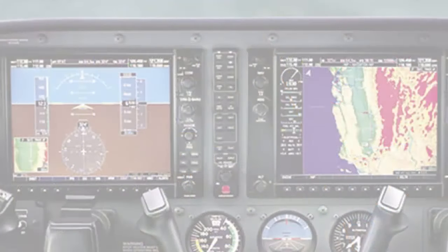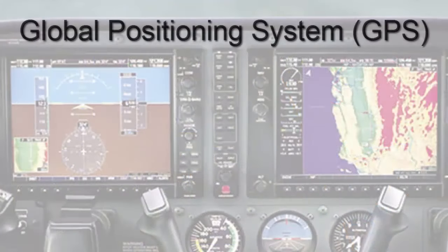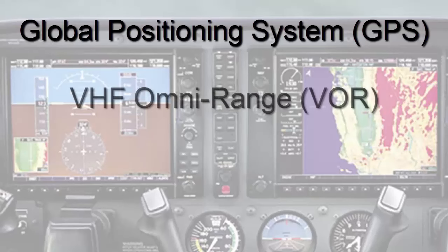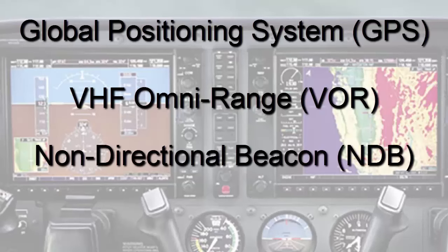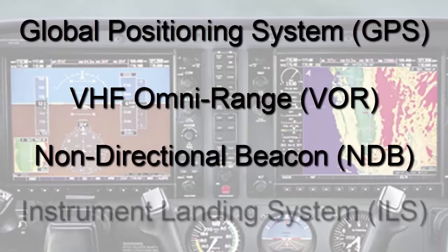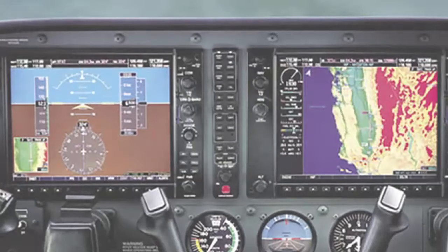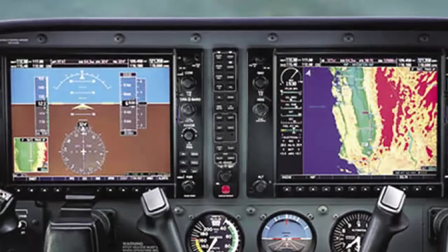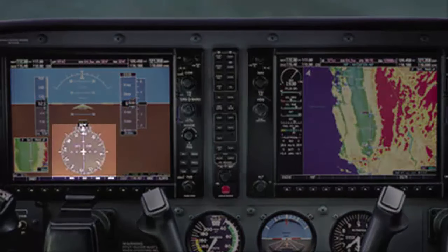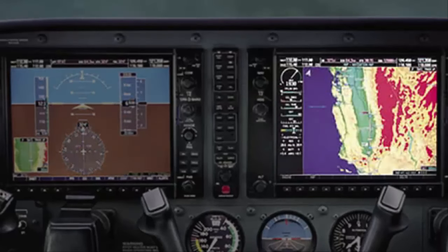Navigation instruments are comprised of indicators that display global positioning system, or GPS, VHF omni range, or VOR, non-directional beacon, or NDB, and instrument landing system, or ILS, information. They also provide pilotage information so the aircraft can be maneuvered to keep it on a predetermined path. The pilotage information can be in either two or three dimensions relative to ground-based or space-based navigation information.